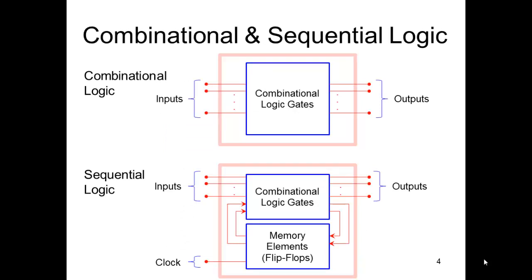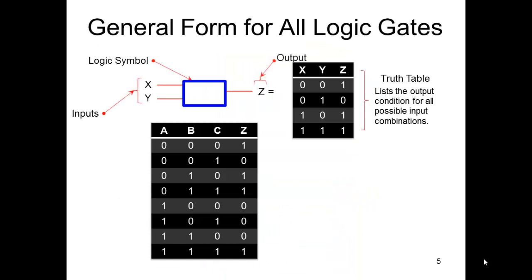We have to get through combinational logic first before we can begin to add on memory elements like flip-flops. This is the general form for all logic gates. There'll be inputs, some kind of shape or rectangle representing the logic symbol, and then the output. The truth table will have the inputs listed in the first columns and then the outputs. The number of lines depends on how many inputs there are. Here you see examples for two input truth tables and three input truth tables.